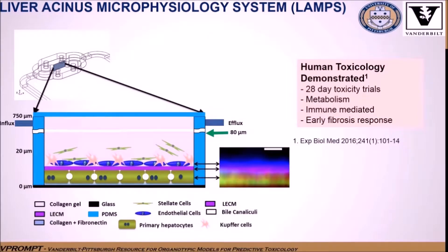The human liver model used for the B-Prompt project: the top left is a schematic view of the commercial device with a slice drawn in to indicate how the four cell types organize and assemble inside. Underneath is an exploded slice view showing the cartoon version of the cellular organization. Cells form distinct layers organized as a near mimic of the liver sinusoidal space, confirmed by confocal microscopy images showing cell layering in three colors. In this model we have demonstrated and published 28-day functionality, 28-day toxicity studies, drug metabolism capability, immune-mediated toxicity, and the early activation of fibrosis.